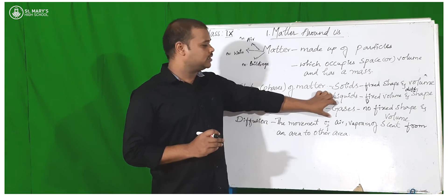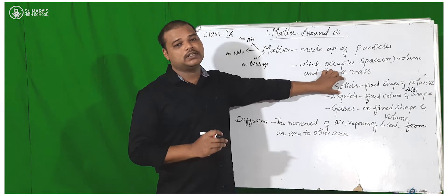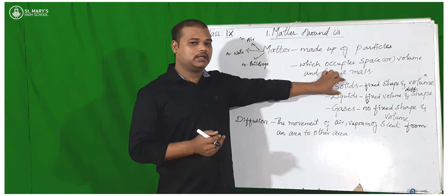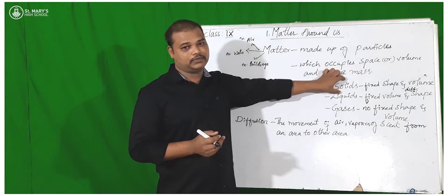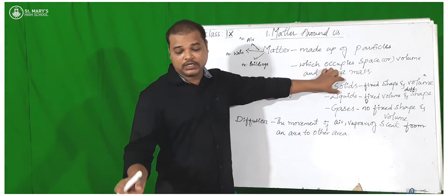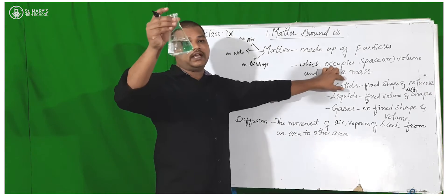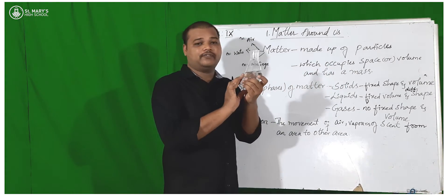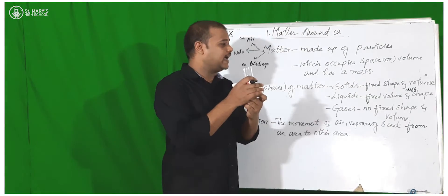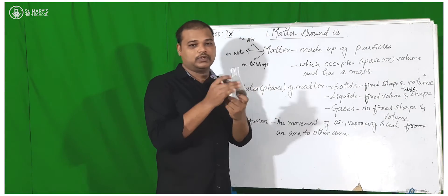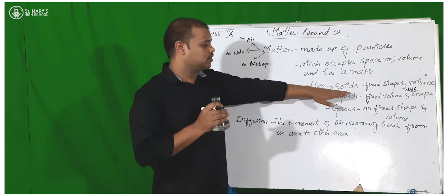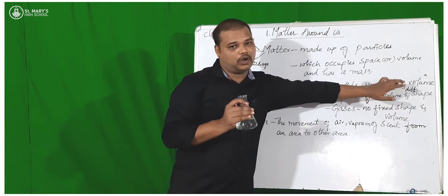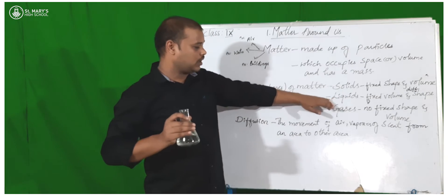Students, you may come across a lot of things which are solids. Can you give an example regarding solids? So just now we discussed about the conical flask. This conical flask has a fixed shape and a fixed volume. So what are solids? Solids have a fixed shape and fixed volume.